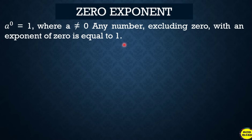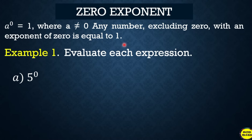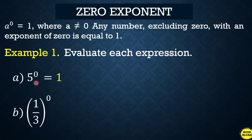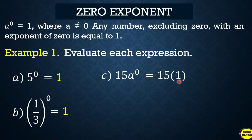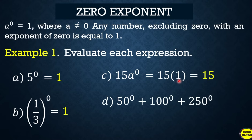Let's try some examples. Five raised to zero — by the definition, any number raised to zero is one. The quantity of one-third raised to zero is still one. For 15a raised to zero, the zero is only applied to a, not to 15. So only a becomes one, then we multiply by 15, giving us 15 times 1, which equals 15.